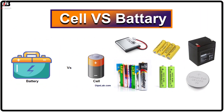The cell supplies power for a short time, while the battery supplies power for a long time. The cell is cheap while the battery is costly. The cell is most used in clocks, lamps, and similar devices which require low energy.